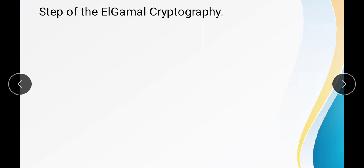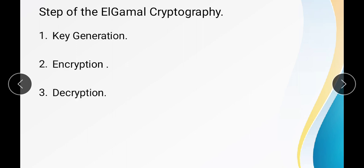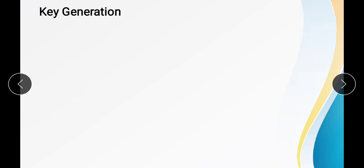ElGamal uses three steps: key generation, encryption, and decryption. For the key generation step, we first select a large prime number p, then select the decryption key, that is the private key d, where 1 ≤ d ≤ p minus 2.